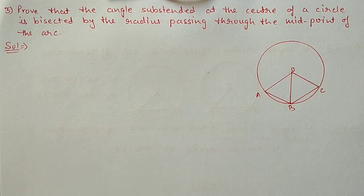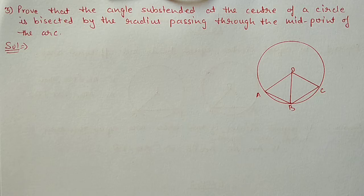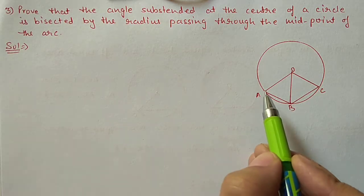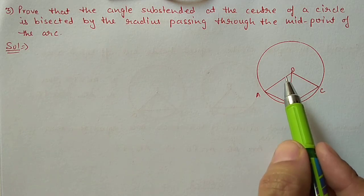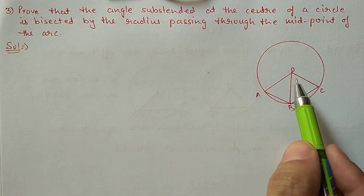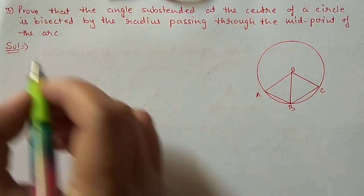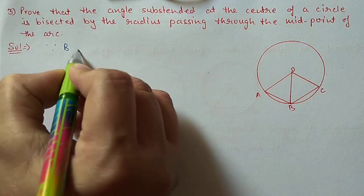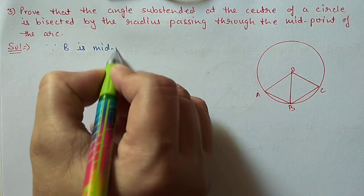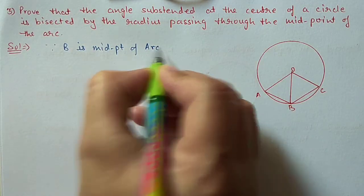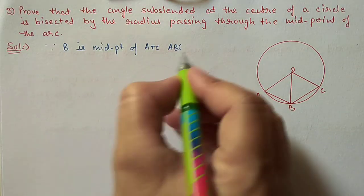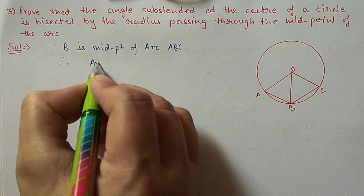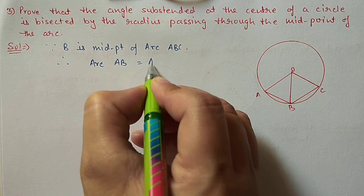Next we have question number 3: Prove that the angle subtended at the center of a circle is bisected by the radius passing through the midpoint of the arc. This arc is AC, and we take the midpoint of this arc and join it to the center. Because B is the midpoint of arc ABC, we can write arc AB is equal to arc BC.